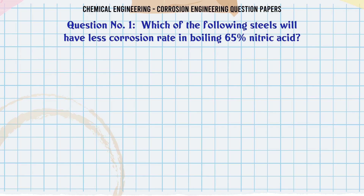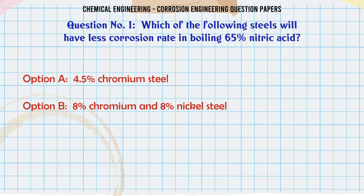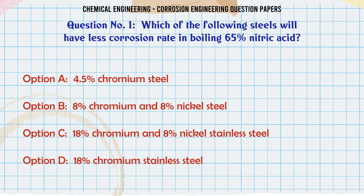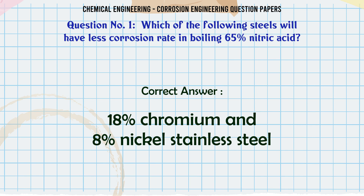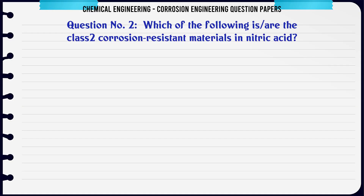Which of the following steels will have less corrosion rate in boiling 65% nitric acid? A. 4.5 chromium steel. B. 8 chromium and 8 nickel steel. C. 18 chromium and 8 nickel stainless steel. D. 18 chromium stainless steel. The correct answer is: 18 chromium and 8 nickel stainless steel.